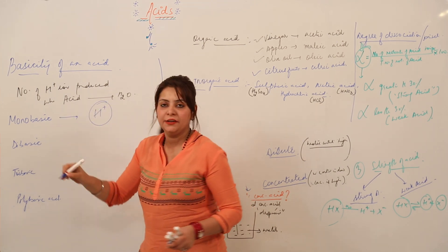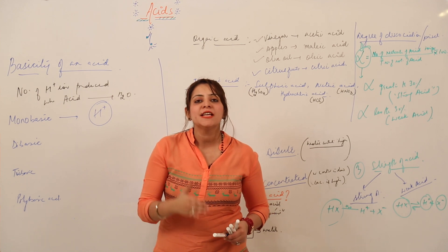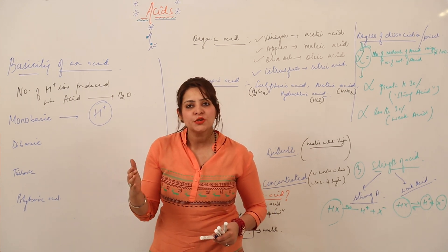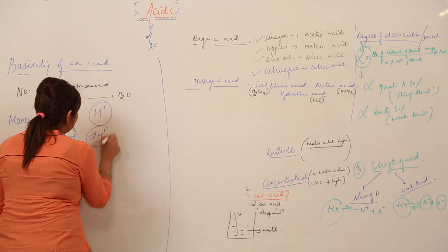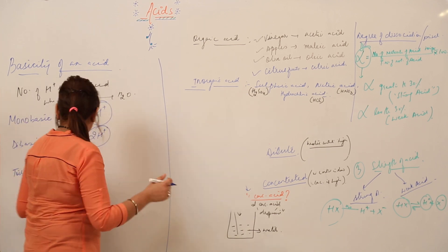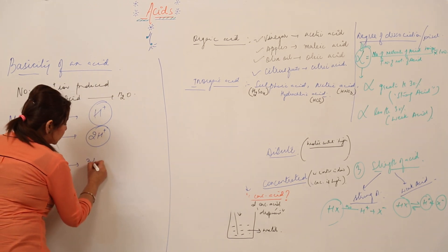If any acid dissolved in water gives one hydrogen ion, that means it is regarded as monobasic in nature. And if an acid dissolved in water gives two hydrogen ions, it is said to be dibasic.